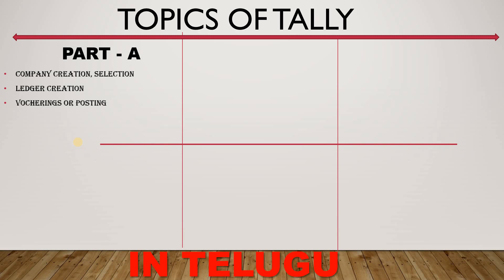We will start with problems. For example, a computer worth 50,000 — we will do voucher posting. So the problems are: first, Mohan invested a capital of 1 lakh; second, a car bought for 1 lakh. First the company is created, then the ledger investment, then the car bought for 1 lakh.